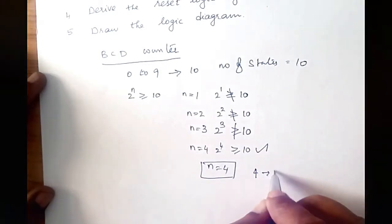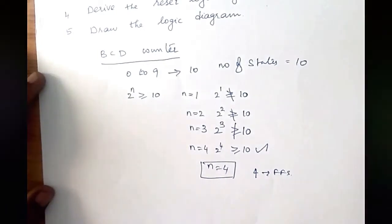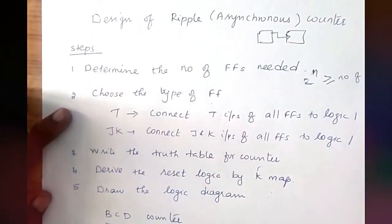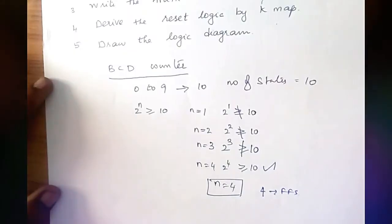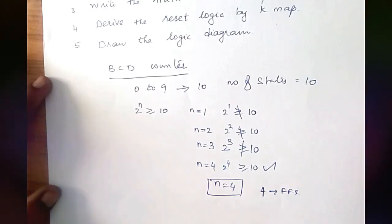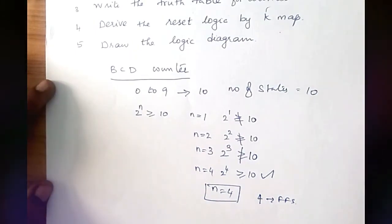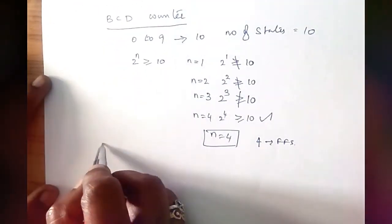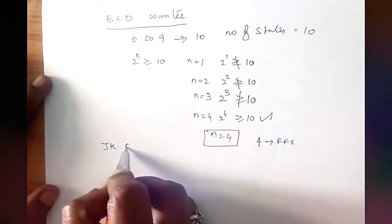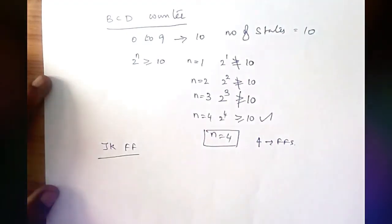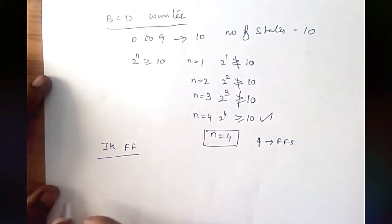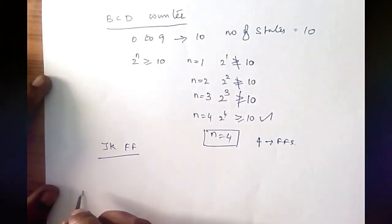The second step is to choose the type of flip-flop. We can choose either a T flip-flop or a JK flip-flop. Whatever flip-flop you use, you have to connect all inputs to logic 1. Now I am going to use a JK flip-flop. The third step is to write the truth table.